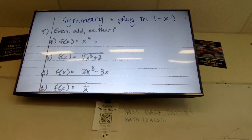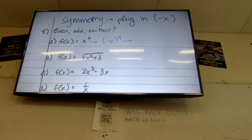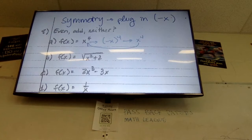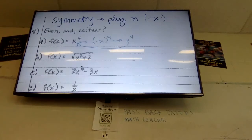For x to the fourth: if I plug in negative x, I get negative x to the fourth. Any even exponent will always give you a positive number — anything to the 6th, the 20th — if it's an even exponent, it's always positive. So it becomes positive x to the fourth, which is the same as what we started with. That makes it even.